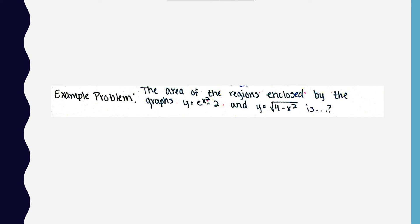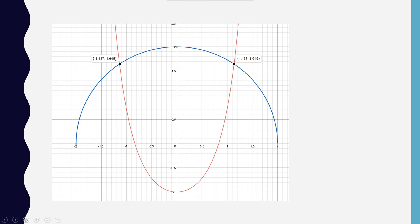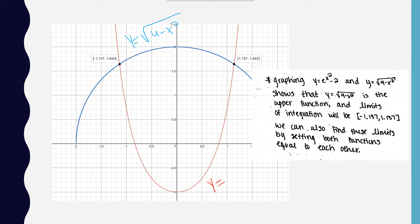The example problem we're going to be looking at wants us to find the area of the regions enclosed by the graphs of y equals e to the x squared minus 2 and y equals radical 4 minus x squared. When we graph these two, we see that y equals radical 4 minus x squared, the blue graph, is above the red graph, which is y equals e to the x squared minus 2. We also see where these two graphs intersect, and those are going to be our limits of integration — we take the x values of the coordinates. So we have limits of integration negative 1.137 and positive 1.137.